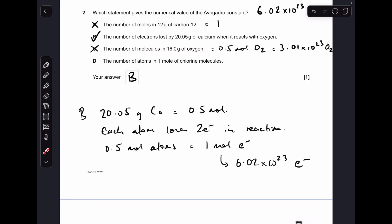Just for revision, I'll explain why C and D are wrong. So C, 16 grams of oxygen is half a mole of O2, which is therefore half of Avogadro's number of molecules. And D is wrong because if you have one mole of chlorine molecules, you've actually got two moles of atoms, so that's two times Avogadro's number of atoms.